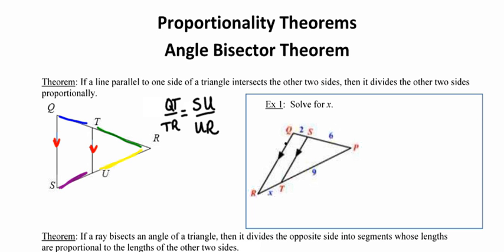You could have done segment QT over segment SU is equal to segment TR over segment UR. That would be another way of stating the exact same proportion. So in the example off to the side where it says solve for X, I need to write a proportion that compares the pieces of the two sides that ST splits. So 2 is to 6 as X is to 9.